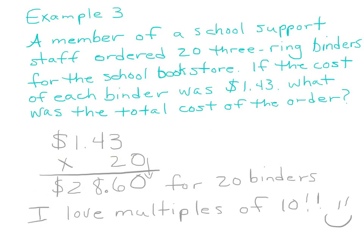Okay? Then, for example 3, a member of a school support staff ordered 23 ring binders for the school bookstore. If the cost of each binder was $1.43, what was the total cost of the order? All right? So in this one, we have $1.43 times 20. Because there's $1.43, there's the times 20. And so we put our 20 here. We go ahead and this is done. We don't have to multiply by that because we're just going to bring it right down. So there it is. And then we multiply. 2 times 3 is 6. 2 times 4 is 8. 2 times 1 is 2.